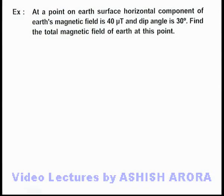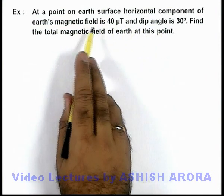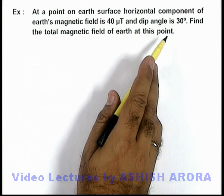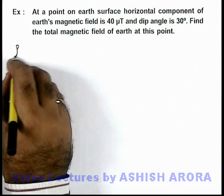In this example, we are given that at a point on Earth's surface, the horizontal component of Earth's magnetic field is 40 microtesla and the dip angle is 30 degrees. We are required to find the total magnetic field of Earth at this point.